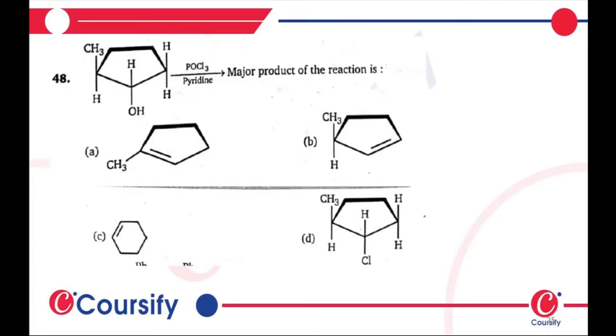We have a pentacyclic five-membered ring with a substitution of CH3, OH, and H. POCl3 in the presence of pyridine will give the major product of the reaction. So the options are: